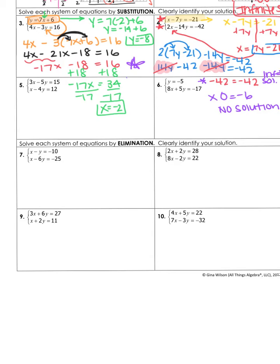For problems 7 through 10, they want us to use elimination. I'm going to do 7 with you first. Remember, with elimination you're trying to find a variable that has the same coefficient in front of it, so that you can either add or subtract and eliminate that variable. Sometimes we have to multiply to make it have the same number in front. For this first one, we have x minus y equals negative 10, and x minus 6y equals negative 25. Notice right off the bat, our x's both have a positive 1 in front of them, so we can eliminate those.